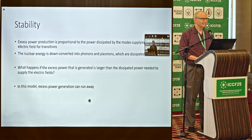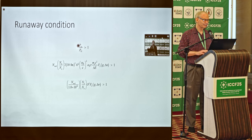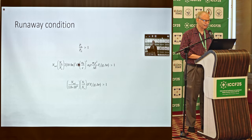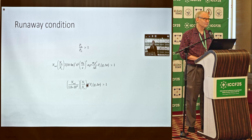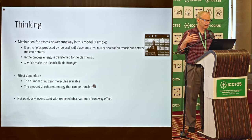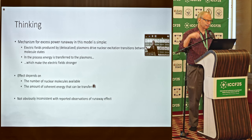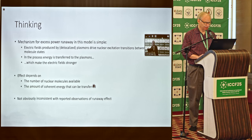Now that we have a formula for excess heat production, the question is: is it stable? The condition for stability or instability — runaway — is if the nuclear power generated exceeds the power dissipated. We get an analytic formula and plugging in numbers, this looks to me like it can be consistent with Fleischmann–Pons runaway, Mizuno's runaway, and other runaways. The mechanism for runaway is simple: plasmons make an electric field driving the nuclear transitions, nuclear power goes into the plasmons making the field stronger, and it can runaway if the rate at which energy goes into the plasmons is faster than the rate at which it leaves.